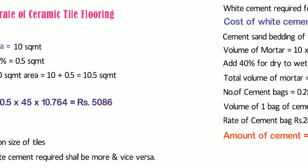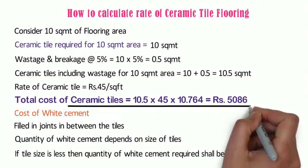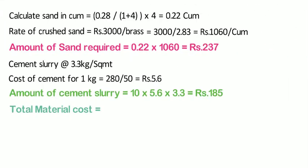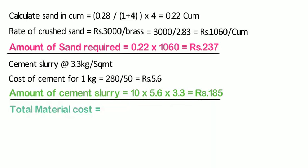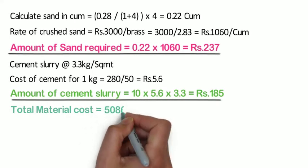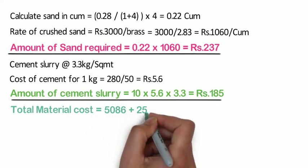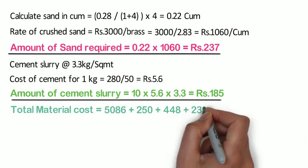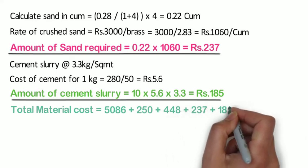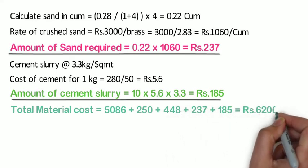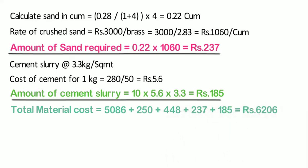Total material cost = cost of ceramic tile + white cement + gray cement + sand + cement slurry = 5,086 + 250 + 448 + 237 + 185 = 6,206 rupees.